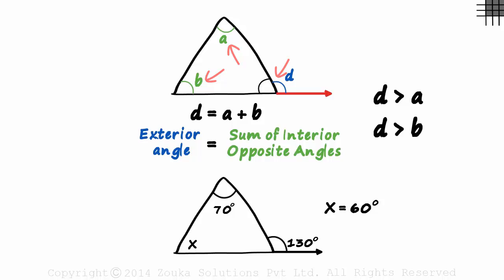And if we call the interior adjacent angle C, then we can say that C and D form a linear pair, which means their sum will be 180 degrees.